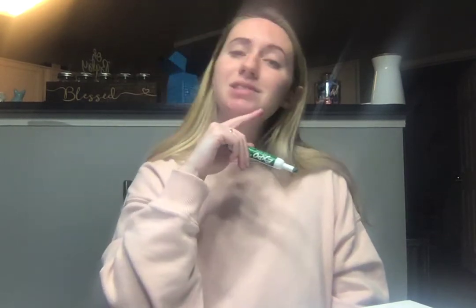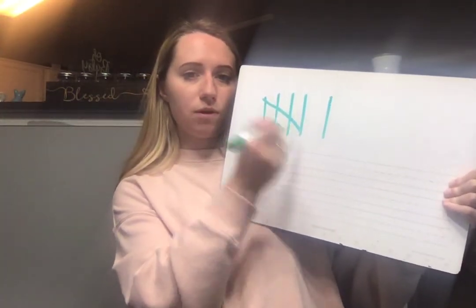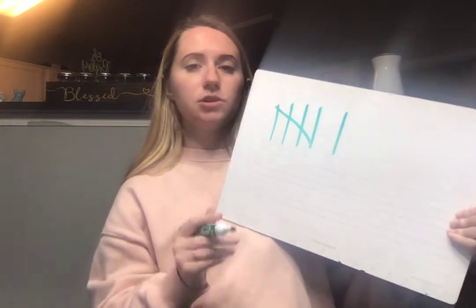Here's the first one. I want you to make the number six. I'm also going to make it on my whiteboard. If you're not ready, pause it and then press play when you're ready. Here's the number six: one, two, three, four, five, six. You should have a group of five and then one tally mark left over.